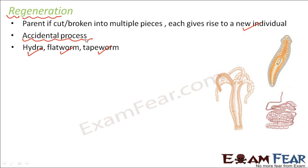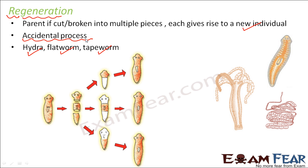These were some of the different types of asexual reproduction discussed here. There are other methods too, like spore formation and vegetative propagation — vegetative propagation is more common for plants, but we are not taking those up right now. Here you can see an example of regeneration: this is planaria. If somebody cuts planaria into three halves, each of those halves will give rise to a new organism.